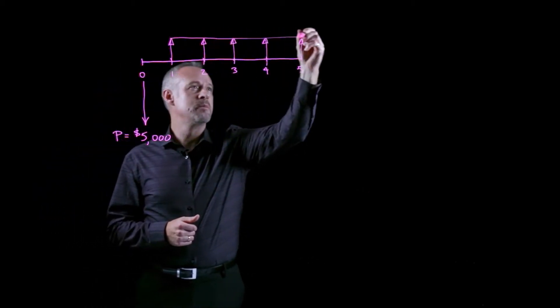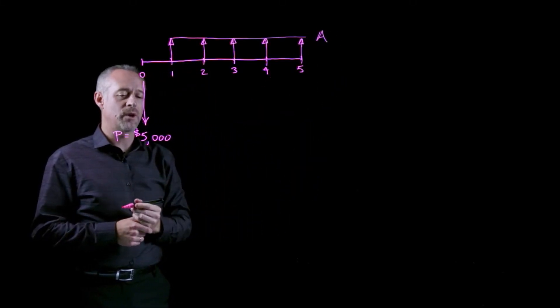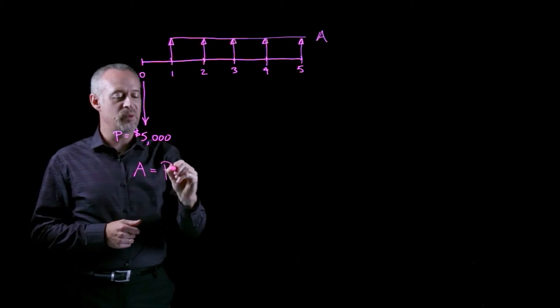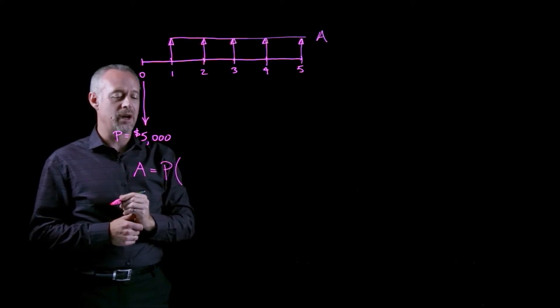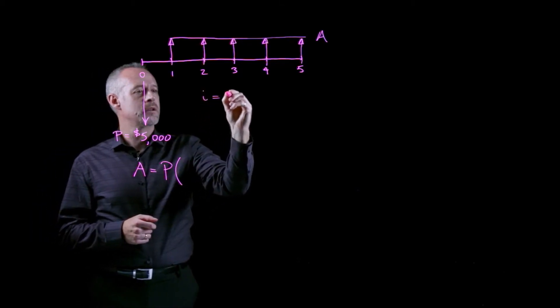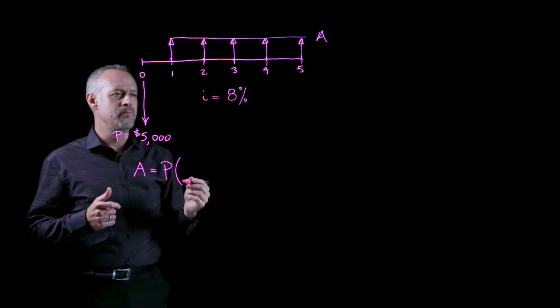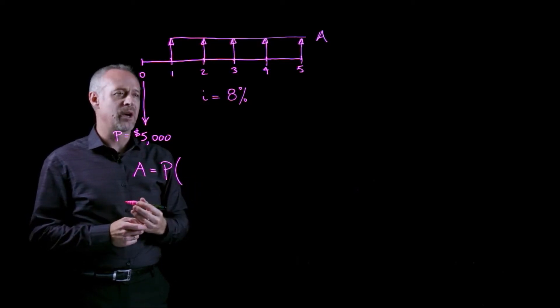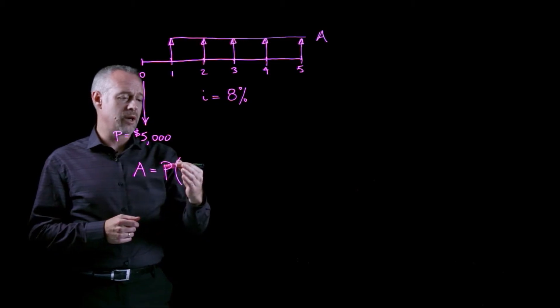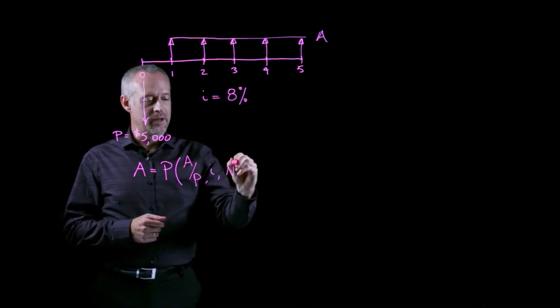This type of uniform series we refer to as an annuity or A and the task in this problem is quite simply what is the value of A given that we already have the value of P and in order to calculate it we'll need to multiply by some compound interest factor. Now we also learn in this problem that the value of the interest rate is 8% and doesn't really say anything about compounded monthly or compounded semi-annually. It's essentially an 8% compounded yearly number. So the time value of money equation or our compound interest factor is quite simply the A given P factor for a certain interest rate and a certain number of years.